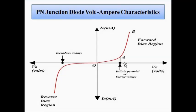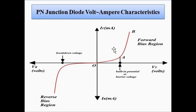Once the forward voltage crosses the built-in potential or barrier voltage, there is a sharp increase in forward current. Beyond this point, any small increase in forward voltage leads to a large increase in forward current — the slope is very high. So the entire forward bias operation revolves around behavior before and after the built-in potential value.